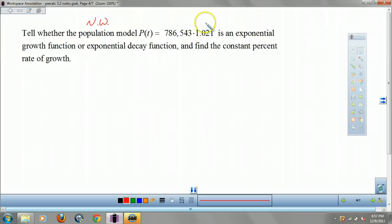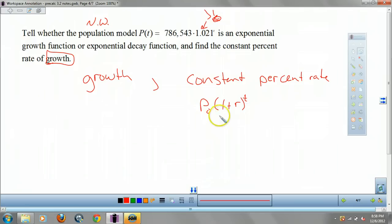Well, remember if this is greater than one, it's growth. If it's less than one, it's decay. So this is indeed growth. Now, what's my r? It's my constant percent rate. Well, remember that's your initial times one plus r to the t. Well, in this one, what are we adding to that one? Well, this is one plus 0.021. So that's our constant percent rate, 2.1 percent or 0.021. That's not a percent.